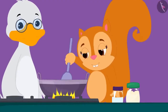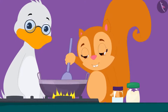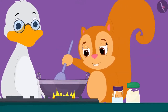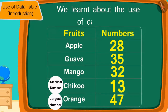Children, in this way you can get various kinds of information by using the data table. Uncle too found that the number of oranges was the largest, and Chanda and Uncle together started preparing to make orange barfi. In this lesson we learned about the use of data table. In the next video we will learn more about it through some interesting examples.